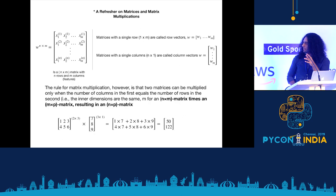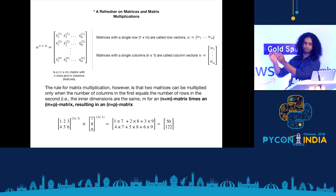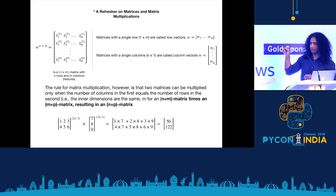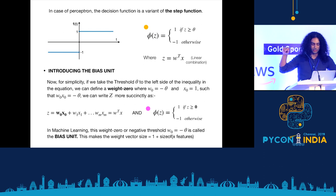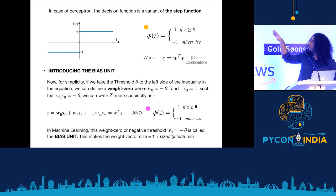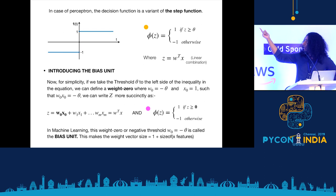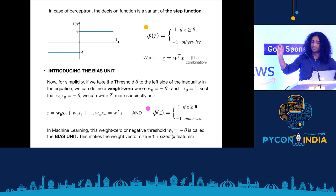A refresher on matrix multiplication: when multiplying matrices, the inner dimensions must be the same. If you have an N×M matrix, the other matrix must be M×P, giving you an N×P result. In the perceptron, the decision function is a variant of the unit step function: if the net input Z is greater than some threshold theta, we predict 1, else minus 1. For simplicity, we bring theta to the left side, which gives us: minus theta plus Z ≥ 0. This minus-theta term is known as the bias unit, denoted W0.